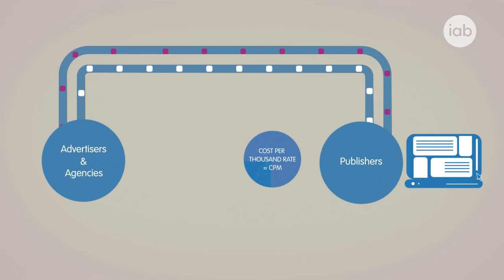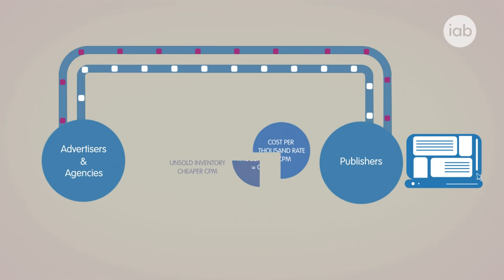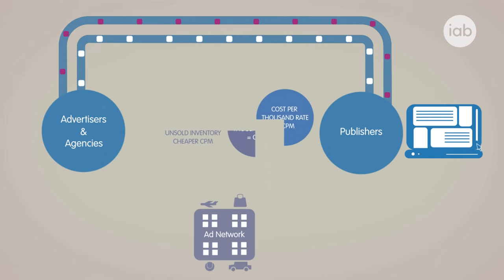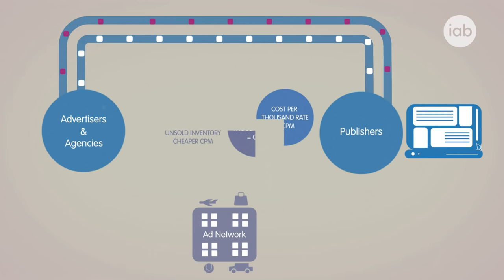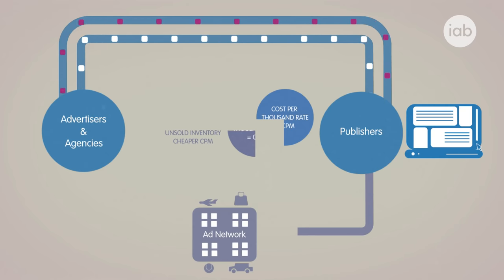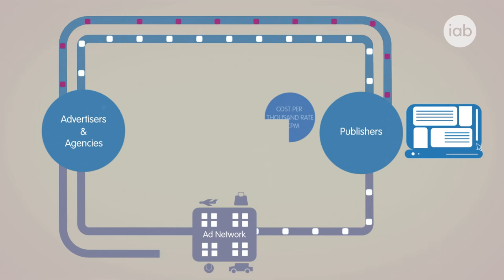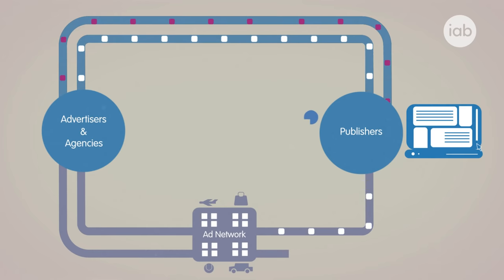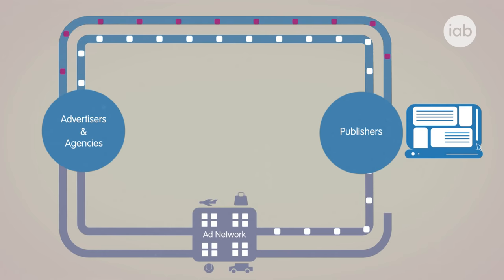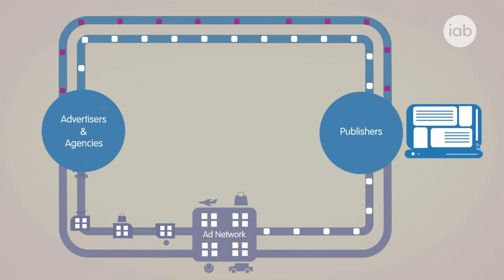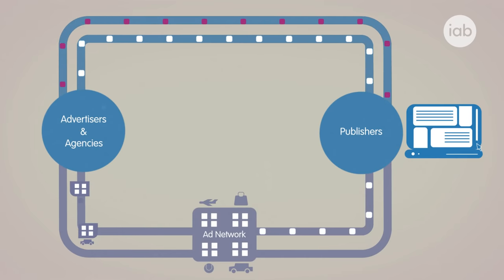Publishers who were unable to monetise all of their available inventory would sell on their remnant impressions to ad networks, who would aggregate supply from multiple publishers and sell on packaged inventory at a discounted rate. This method became known as indirect selling, with networks acting as brokers or intermediaries for publishers.